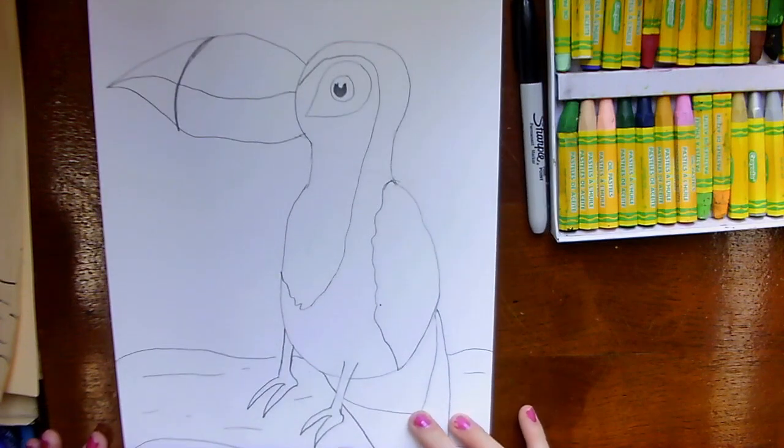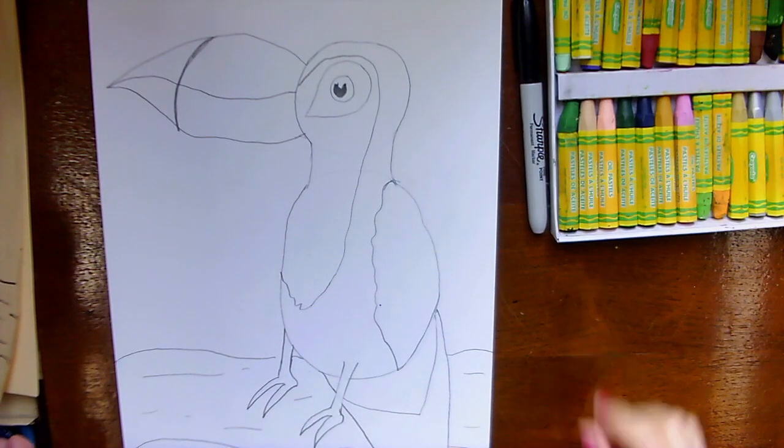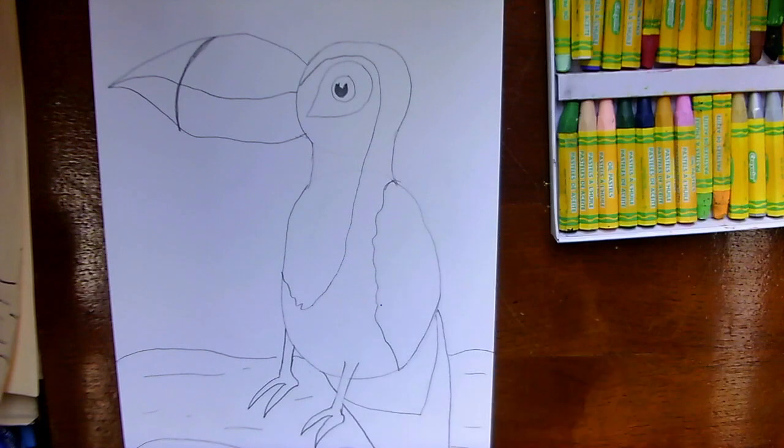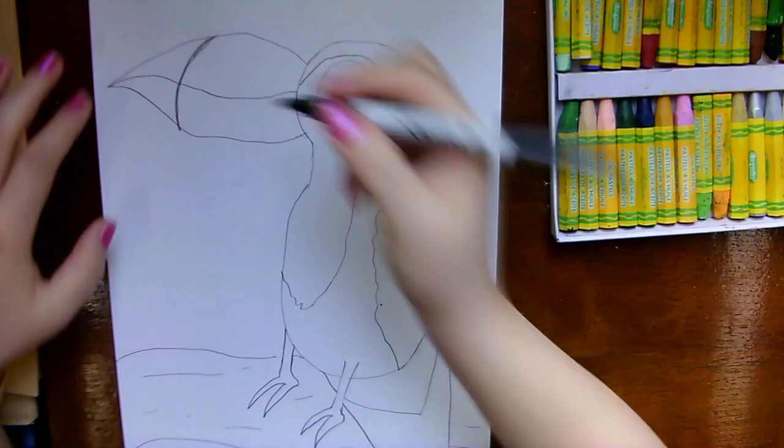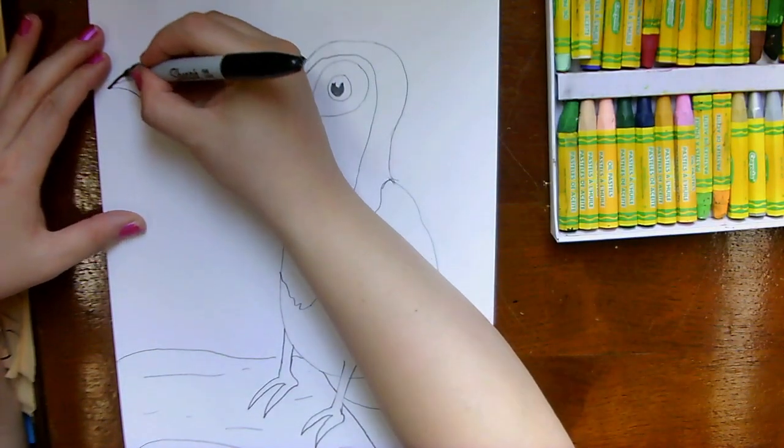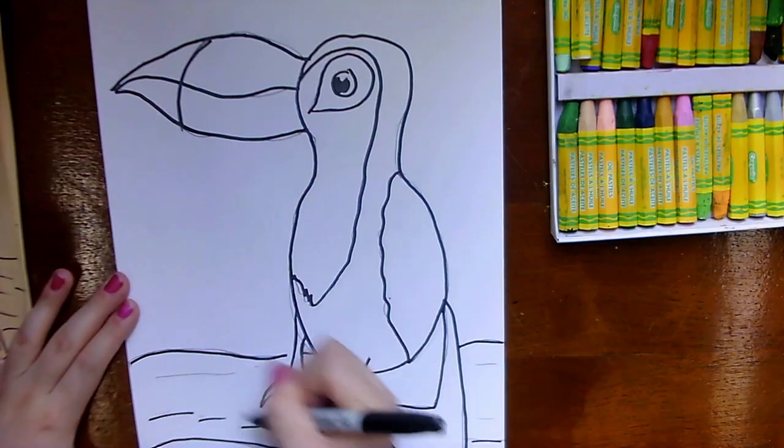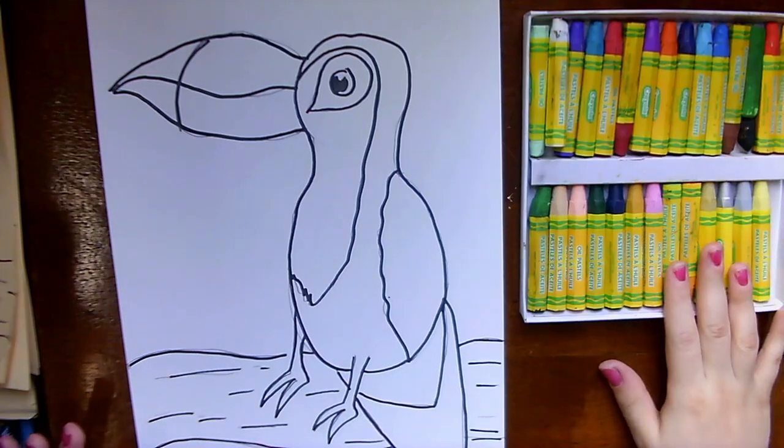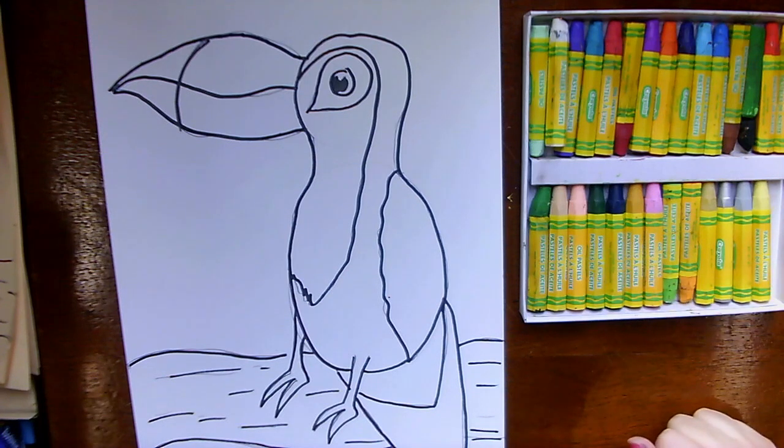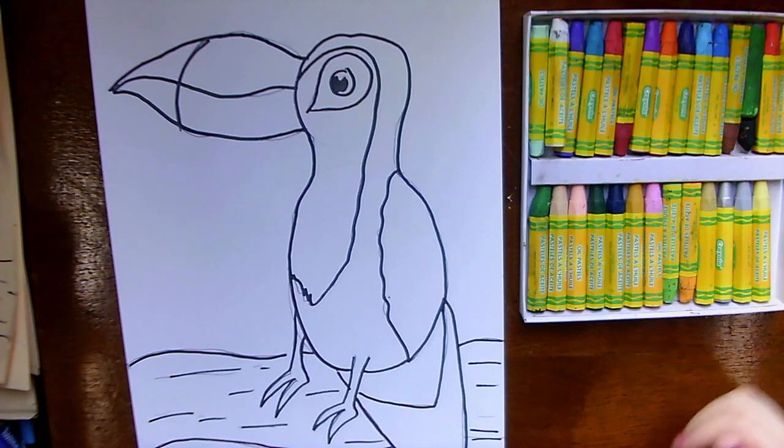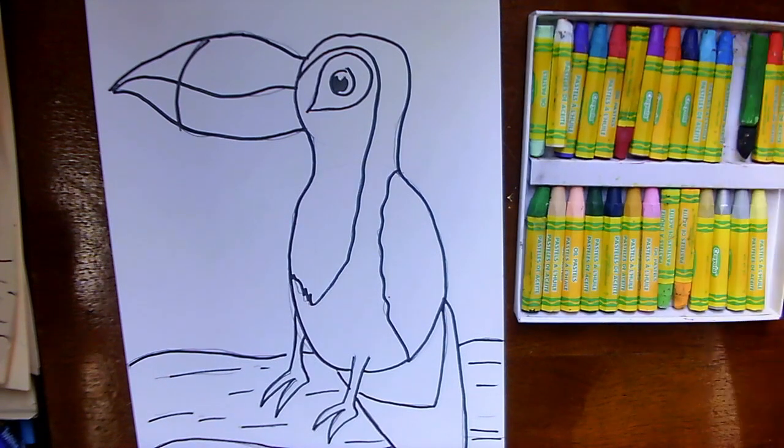Now that we have our toucan fully drawn you can start outlining. So if you have a black marker it doesn't have to be a sharpie I'm going to start to outline my toucan. Now I'm going to be using oil pastels to color in my toucan. You can use whatever coloring materials you have at home to color your toucan. Can't wait to see the finished product! Have fun!